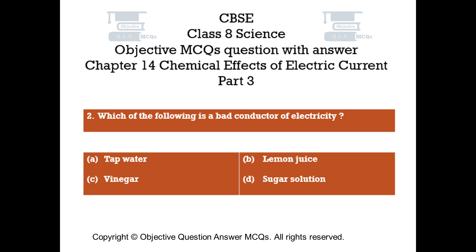Question number 2. Which of the following is a bad conductor of electricity? Option A: Tap water. Option B: Lemon juice. Option C: Vinegar. Option D: Sugar solution.